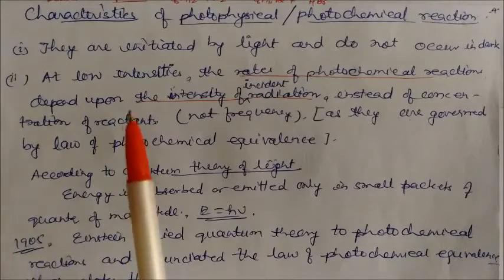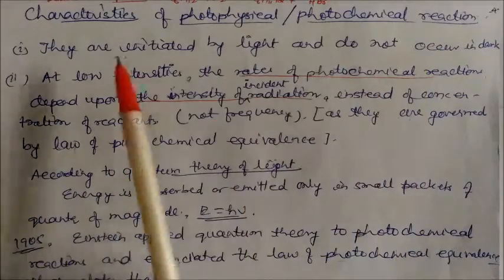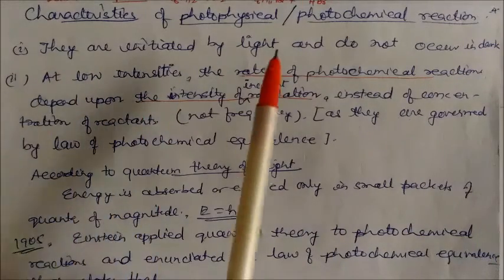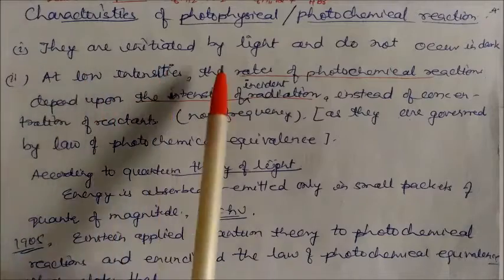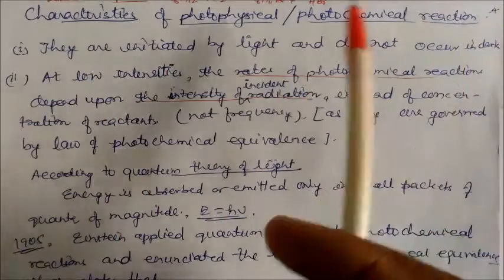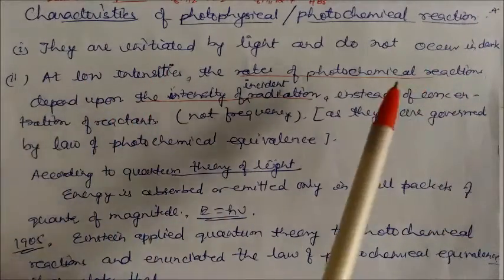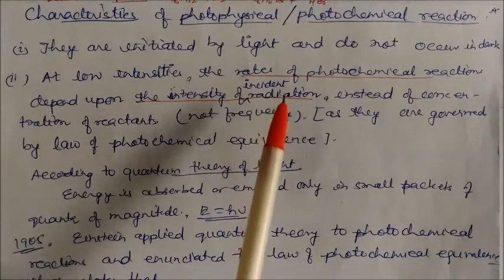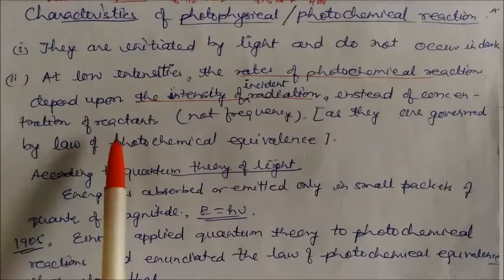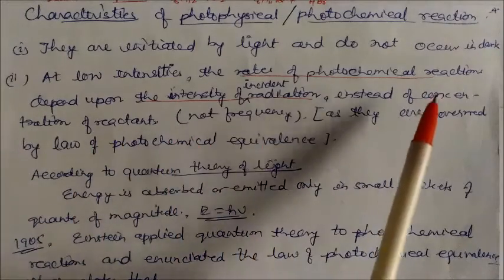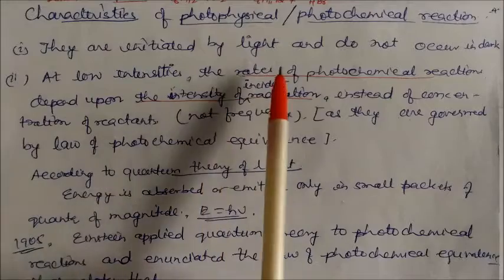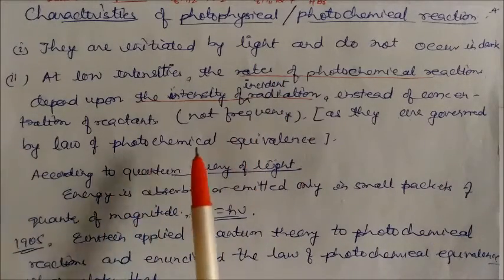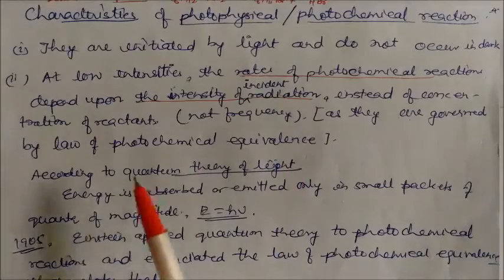Characteristics of photochemical reactions: they are initiated by light and do not occur in dark. At low intensities, the rate of photochemical reactions depends upon the intensity of the incident radiation rather than the concentration of the reactant. It does not depend on frequency — only intensity matters. These reactions are governed by the law of photochemical equivalence.